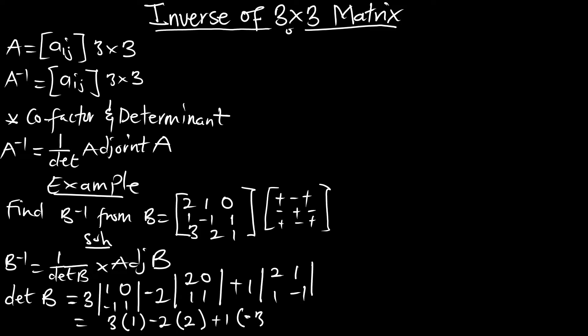Therefore, the determinant of B — delta of B — when you compute everything, that is going to give you negative 4. So we are going to have -4 as the determinant of this matrix B.